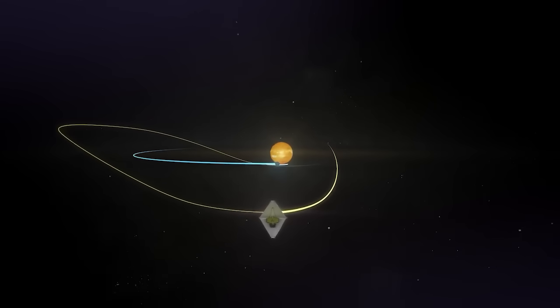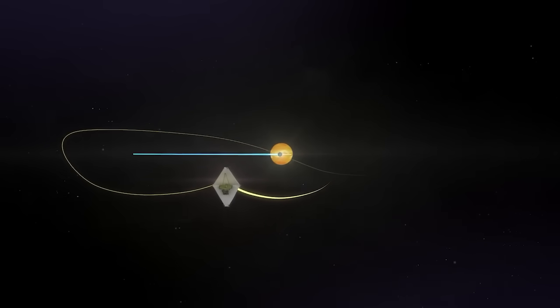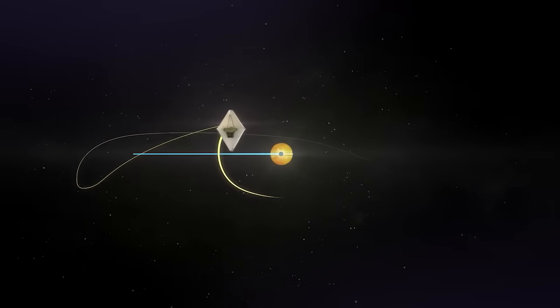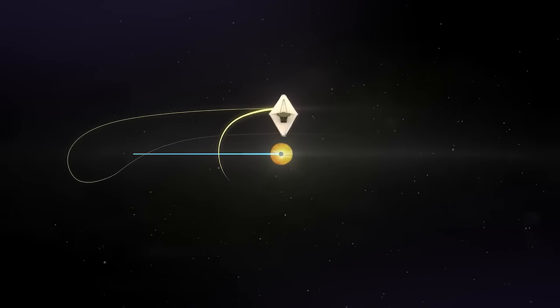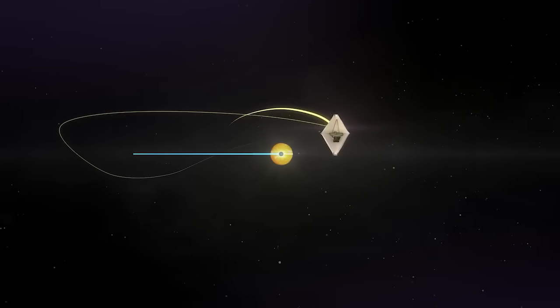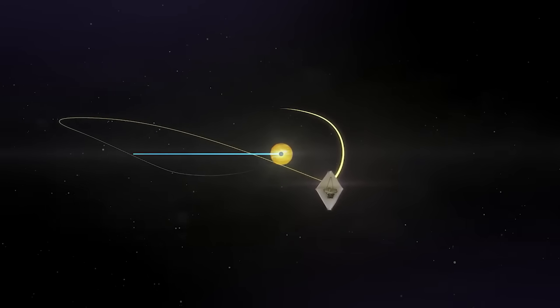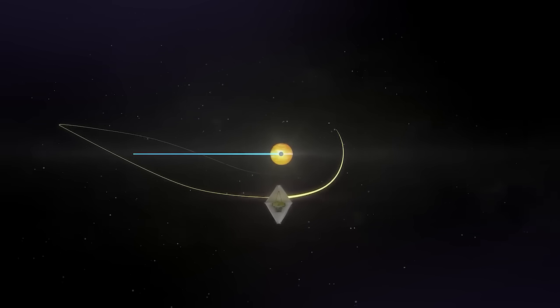The telescope moves around the Lagrange point, at a speed of 1 kilometer per second, and circles it in 6 months. It also accompanies the Earth in its movement around the sun, and thus goes around it in 365 days.